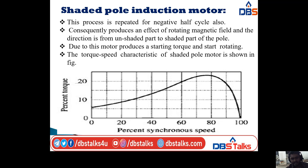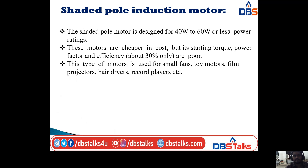This entire process is repeated for the negative half cycle also. Consequently, it produces an effect of a rotating magnetic field, and the direction is from the unshaded part to the shaded part of the pole, causing the motor to produce a starting torque and start rotating. The shaded pole motor is designed for 40 watts to 60 watts or less power ratings. These motors are cheaper in cost.